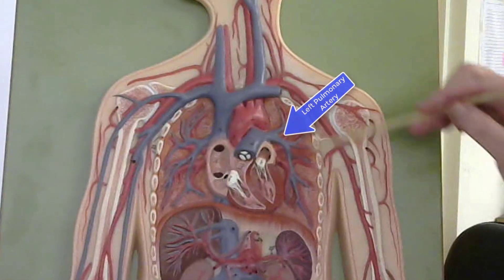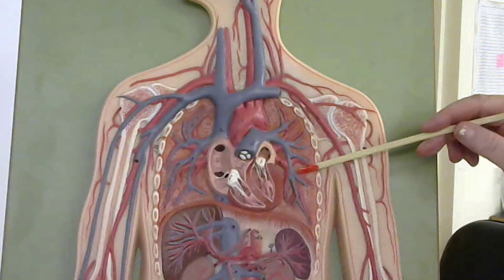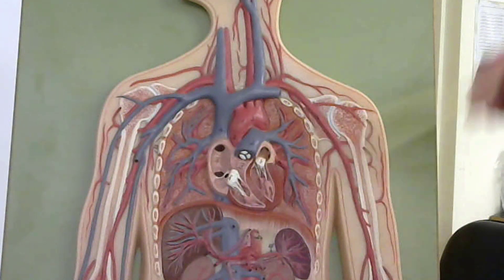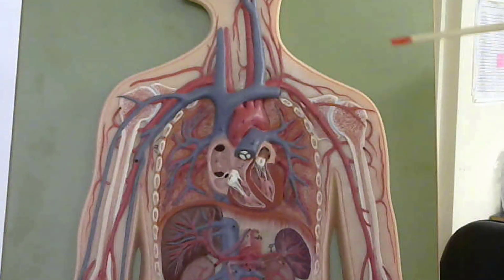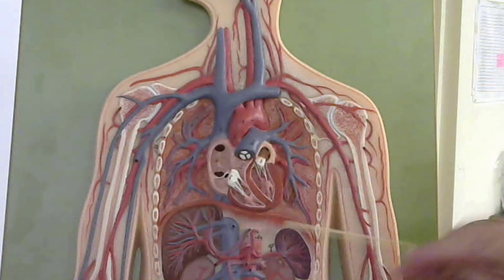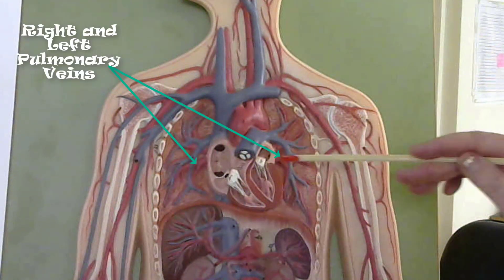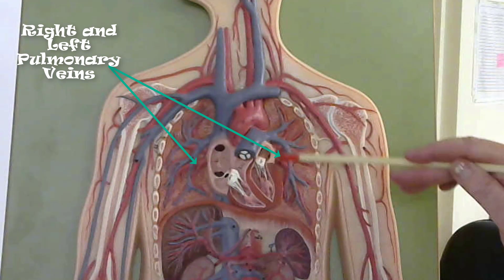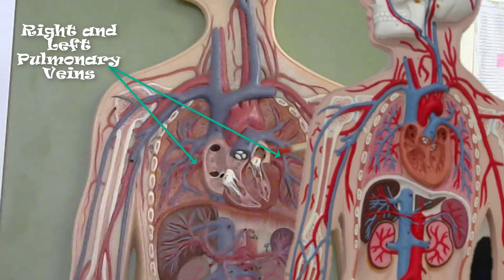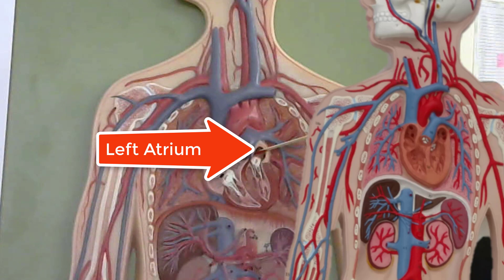From here, the blood is going to deliver carbon dioxide, pick up oxygen, become oxygenated, and return to the heart. It will return to the heart through the right and left pulmonary veins. The right and left pulmonary veins drain into the left atrium.